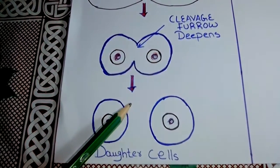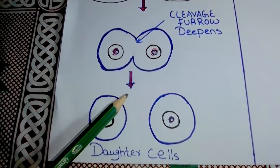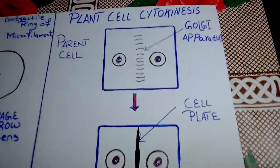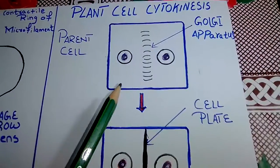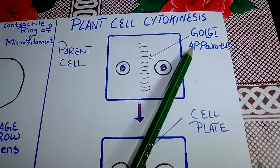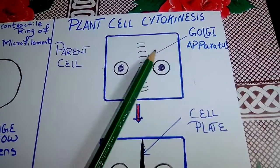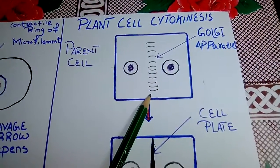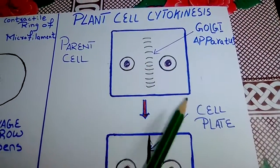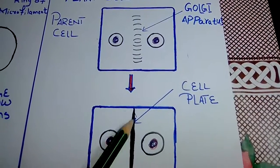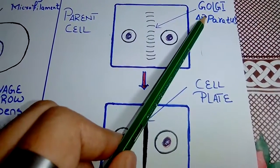That was cytokinesis in animal cells. In plant cells, cytokinesis occurs differently. As you can see in the diagram, vesicles derived from the Golgi apparatus move to the middle of the cell and fuse to form a cell plate.